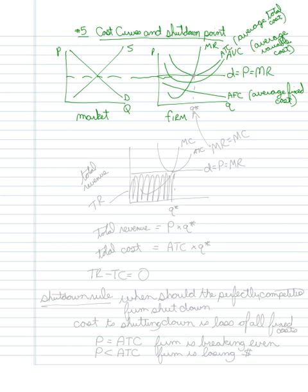Your eyes are kind of attracted to this point right here. That would be the point where marginal revenue equals marginal cost. But it would also be a point where the firm is breaking even if we started to calculate its total revenue and its total cost. Let's look at that a little bit deeper.